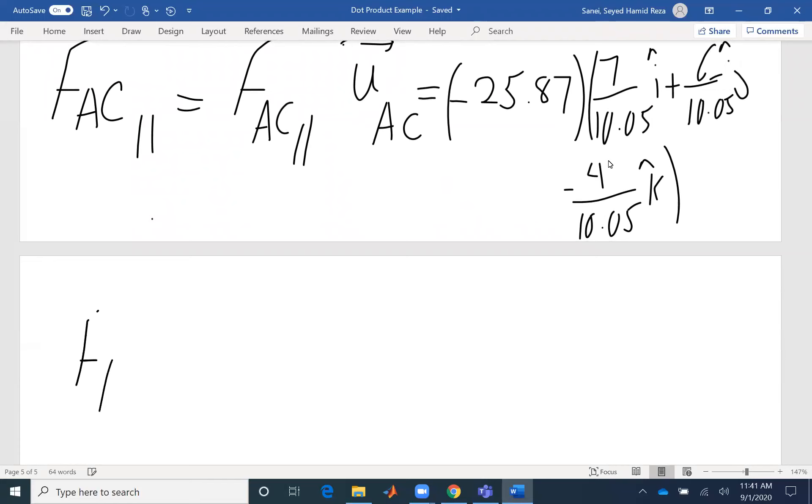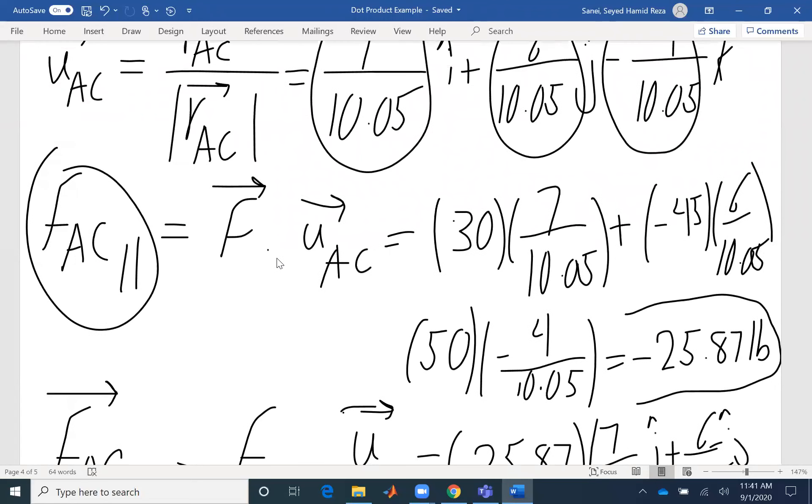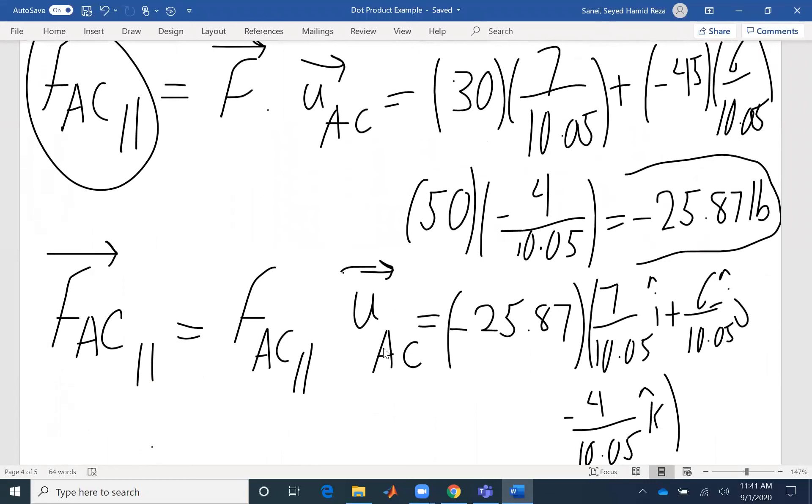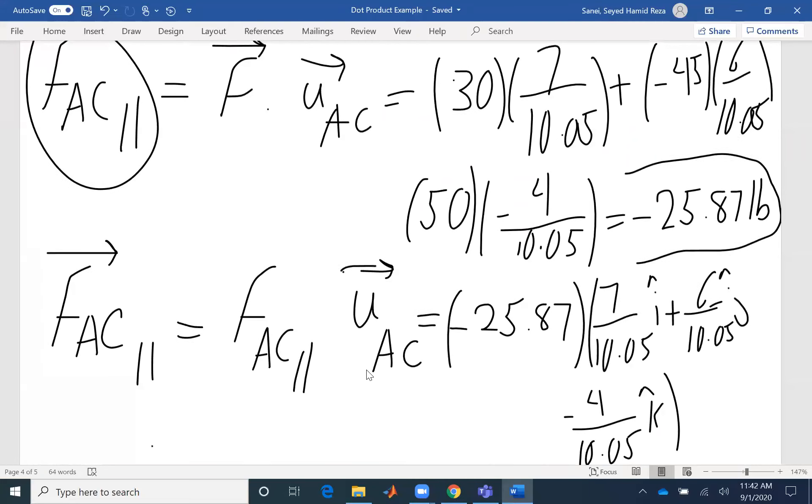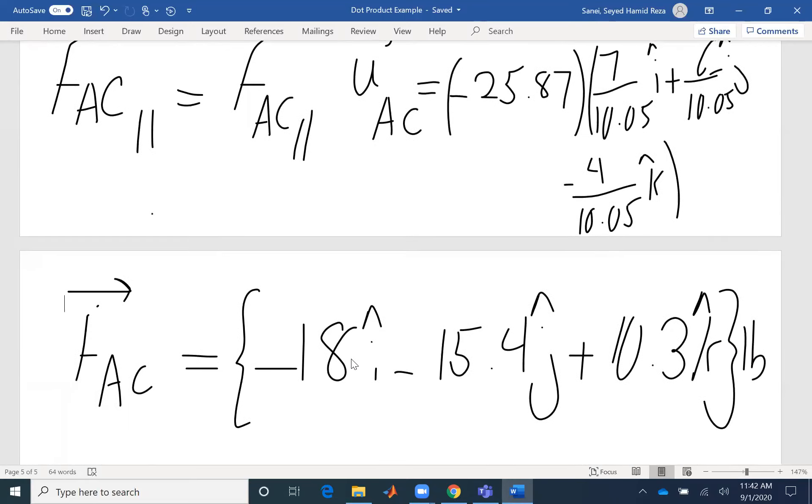My vector FAC would be negative 18i, negative 15.4j, plus 10.3k. And the unit system is pound. So here, I multiplied my force F in a dot product format with the unit vector to get the magnitude of the projection. And because the problem was asking for the Cartesian form, I had a scalar multiplication with a vector to get it in Cartesian form. So I use this unit vector twice, once in a dot product and once in a scalar multiplication. And that's the final answer.